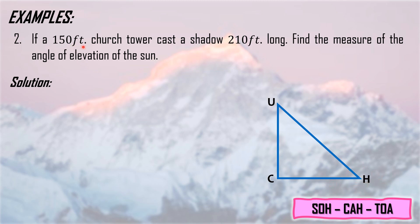The 150 feet church tower means the height of the church is 150 feet. The length of the shadow formed because of the sun is 210 feet. The question is find the measure of the angle of elevation of the sun. We place X degrees here since the question asks for angle of elevation, meaning the angle going upward.